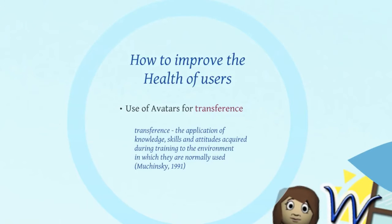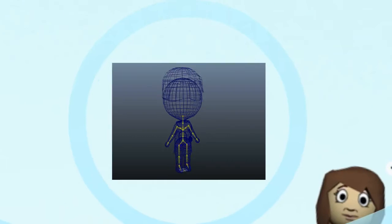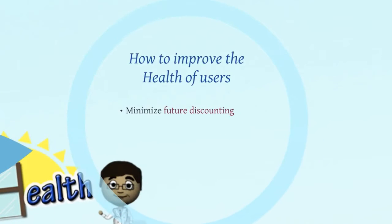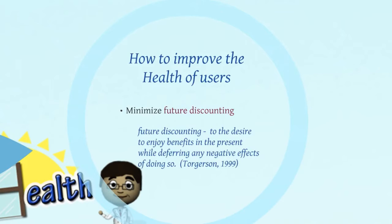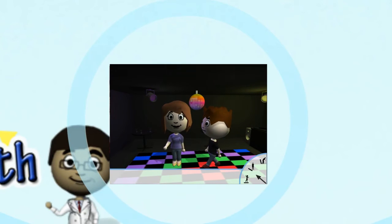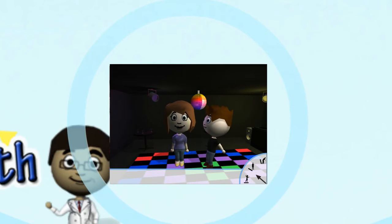We used a technique called transference to relate the experience of the avatar in different health scenarios to the life of the player. Our hope is that some of the positive and negative outcomes shown in our game transferred to real-world decisions. We immediately present the long-term consequences of everyday actions in an effort to minimize future discounting. We believe that users will be positively influenced by seeing the immediate effects of eating unhealthy, drinking excessively, or participating in other unhealthy activities.